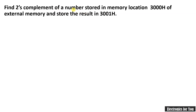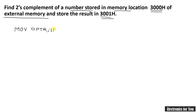The next program finds the two's complement of a number stored in external memory location 3000H, with the result stored into memory location 3001H. Since this is an external memory location, we must use a memory pointer — specifically the data pointer DPTR. The first instruction is MOV DPTR, #3000H, which sets DPTR to point to memory location 3000H. To load the number into the accumulator we use the MOVX instruction: MOVX A, @DPTR.